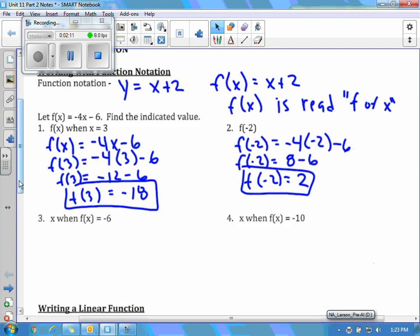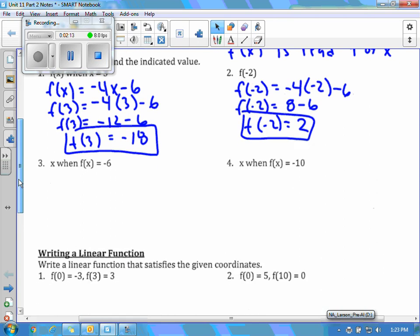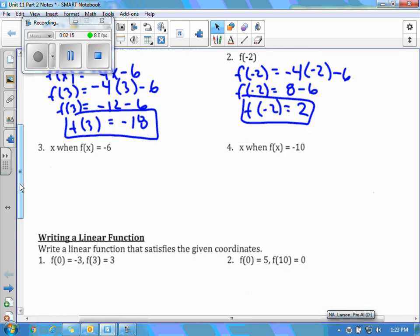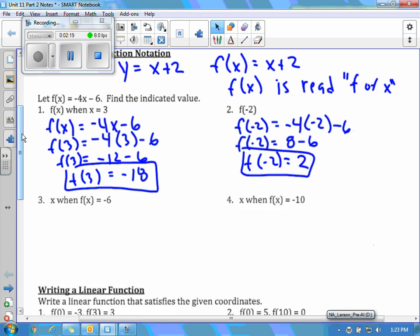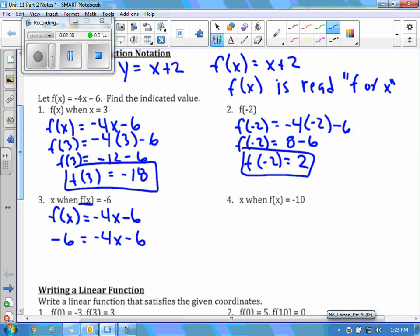Now for 3 and 4, it's a little bit different because now we're going to solve for x. So it says, find x when f of x equals negative 6. So we want to start by writing our original function, which is f of x equals negative 4x minus 6. And what this is saying is we're going to replace all of this with negative 6. So negative 6 is going to go on the left, and then we'll have negative 4x minus 6.